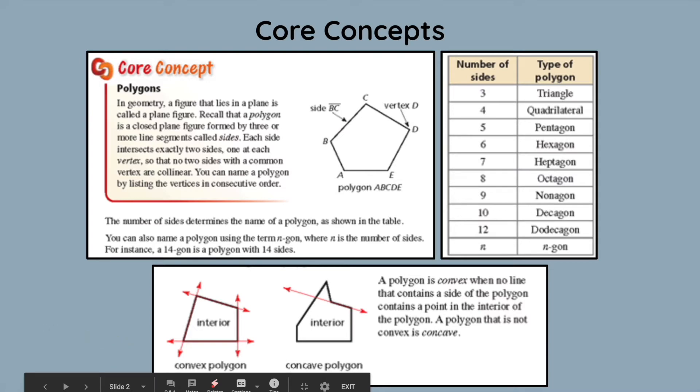Let's first look at some core concepts. We first have polygon, and in simple terms, a polygon is basically a closed plane figure formed by three or more sides. Each side has to intersect at two sides, therefore a polygon would need at least three vertices. Whenever you're naming a polygon, we need to list the vertices in a consecutive order. For example, this polygon that they have listed here, you can name this polygon A, B, C, D, E, polygon E, A, B, C, D, polygon D, C, B, A, E, and so forth. Just make sure that you use all the letters and in a consecutive order.